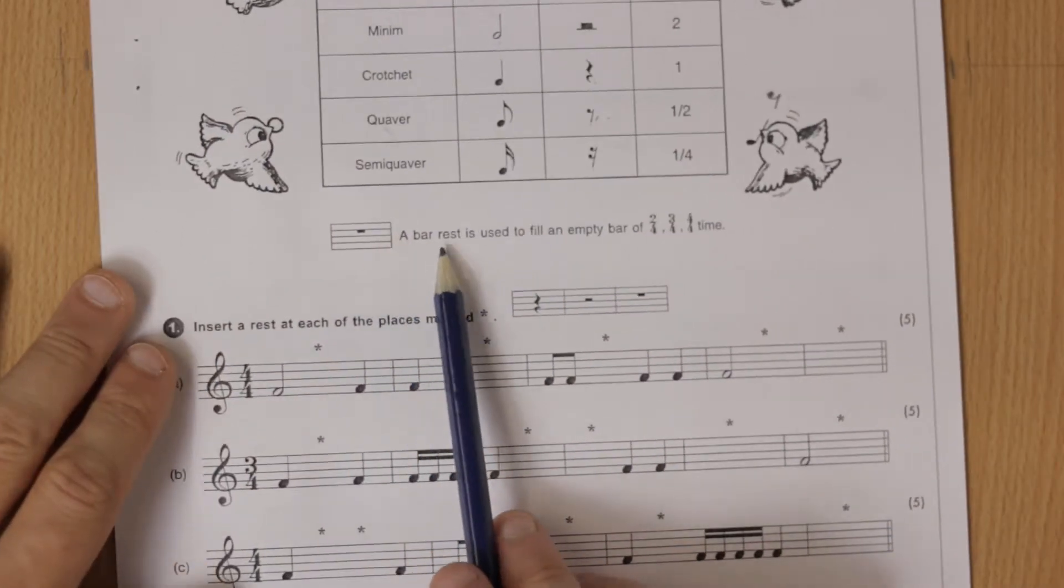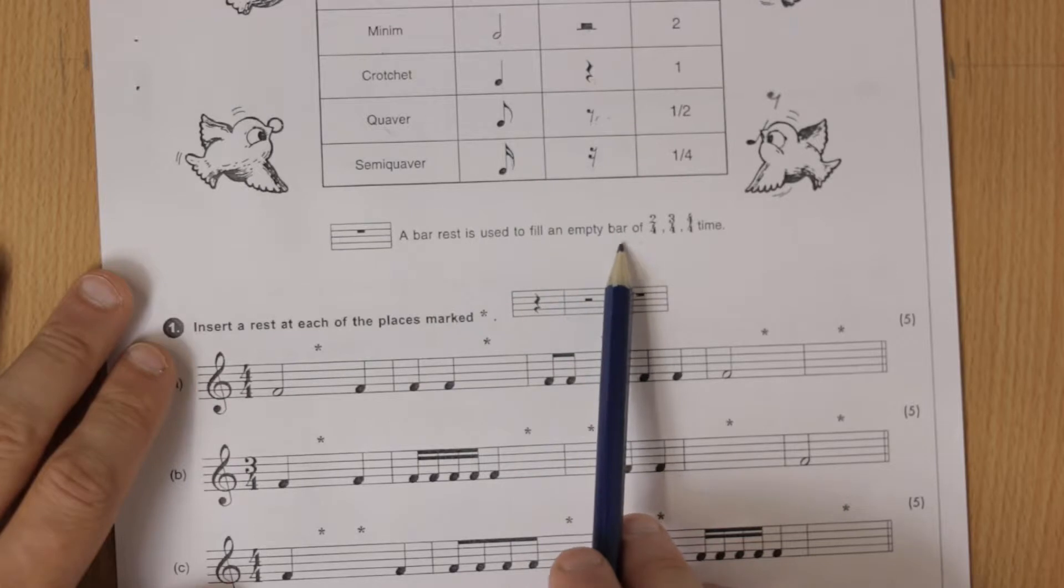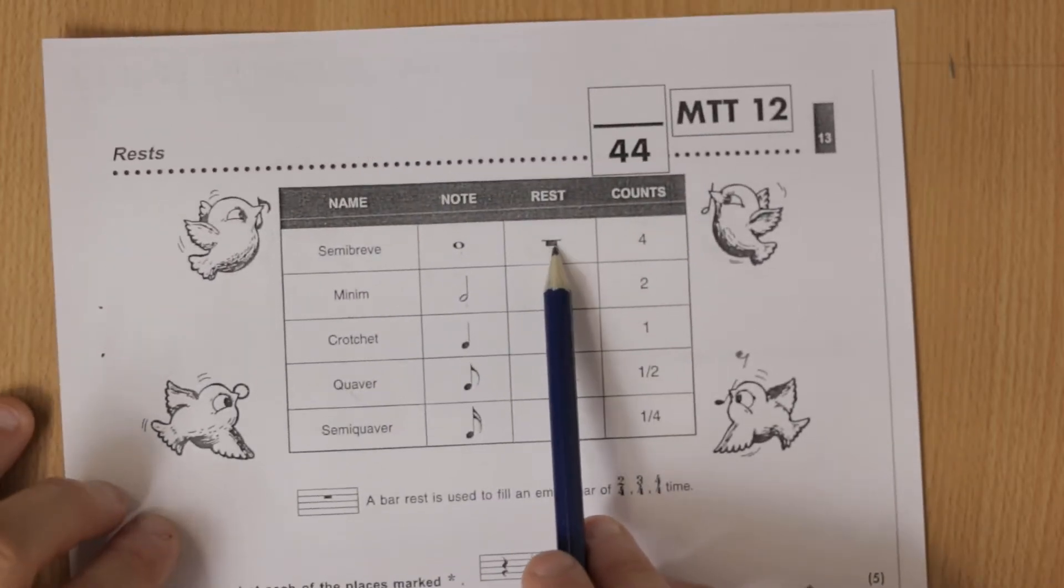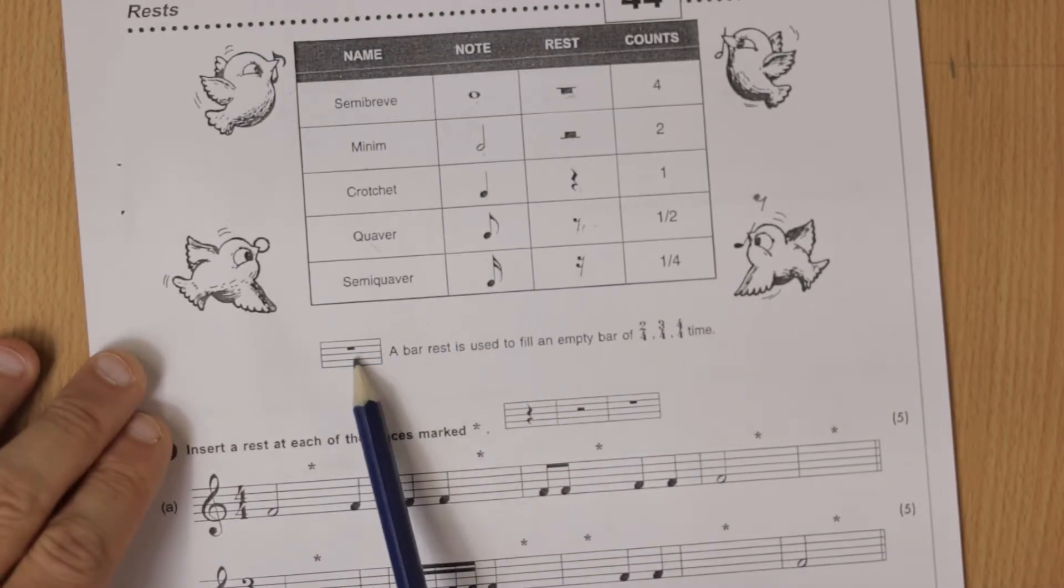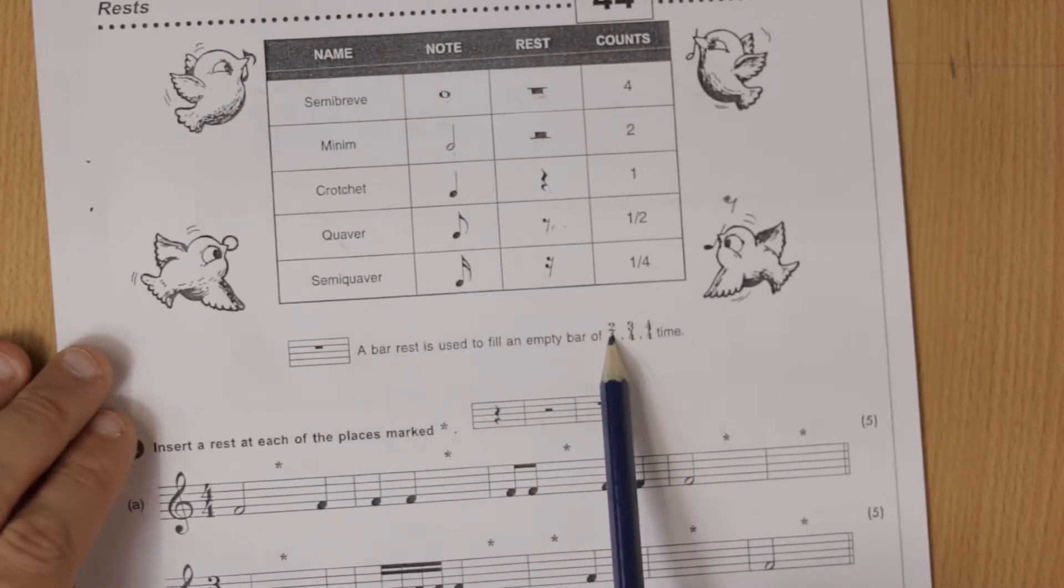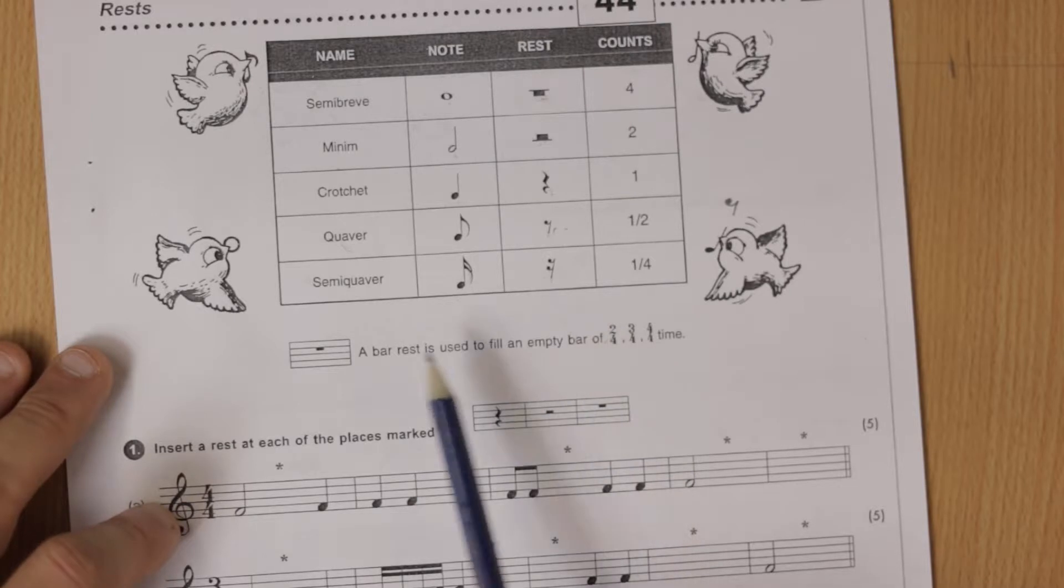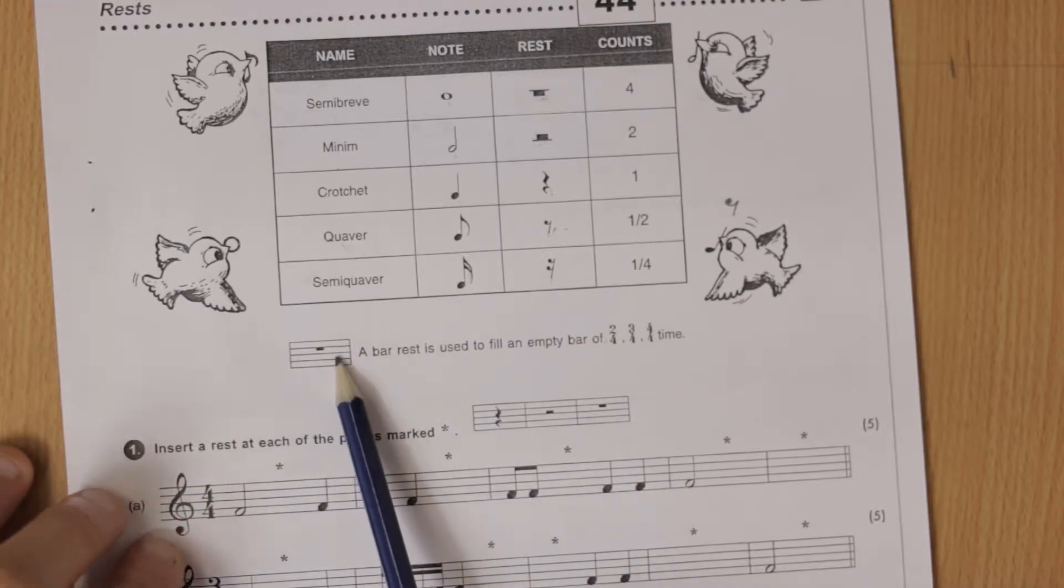And last thing here—a bar rest is used to fill an empty bar. So not only is this a four beat rest, it can also be used for any bar even in two-four. So if you're in two-four you can just use one of these to fill the whole bar up with silence.